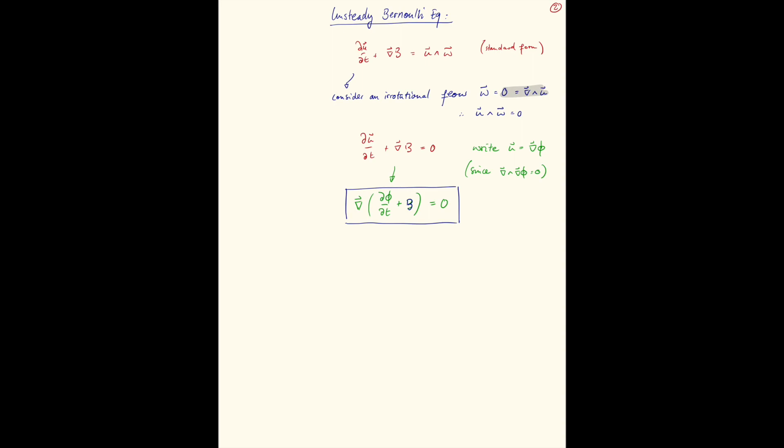Recall the Bernoulli function b from last time, which is just a half, in this case now, it's a half the gradient of phi squared. This used to be u or p, as you might remember, plus the integral dp over rho plus gz.